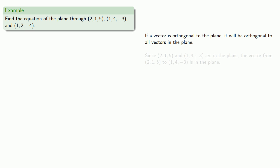For example, since (2, 1, 5) and (1, 4, -3) are in the plane, the vector from (2, 1, 5) to (1, 4, -3) is going to be in the plane. And we find this vector will be...